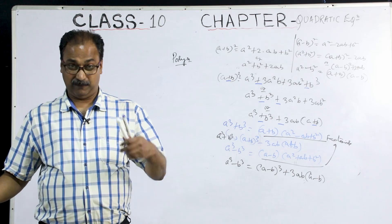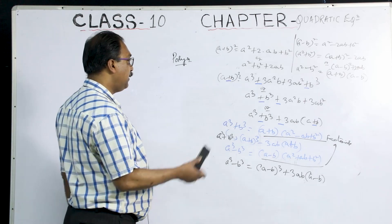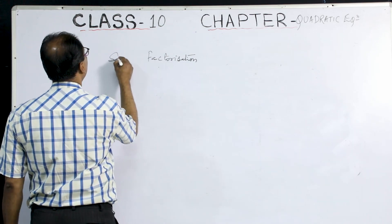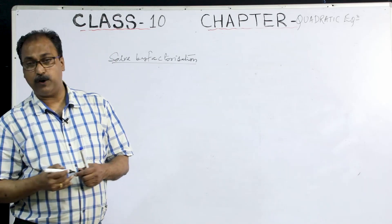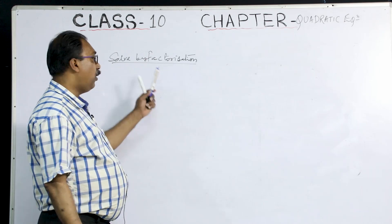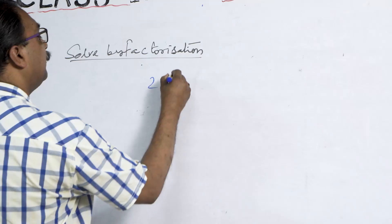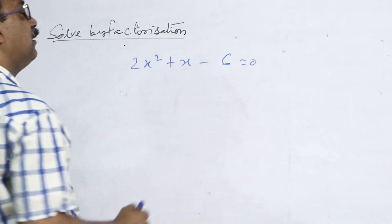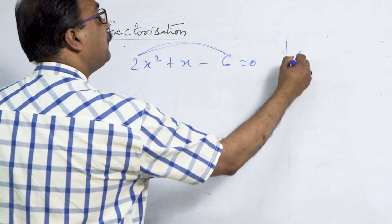Some questions you have to do using factorization with quadratic equations. The topic is: Solve quadratic equations by factorization — this may be exercise 4.2. How to do this? You have to split the middle term — I think all of you know this from class 9. In the rough work, multiply the coefficient of x² by the constant: 2 × 6 = 12. Take the factors of 12.